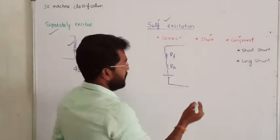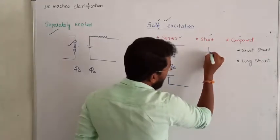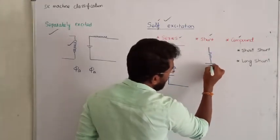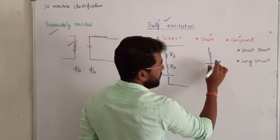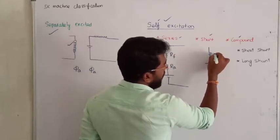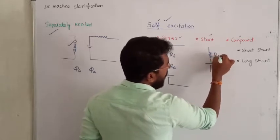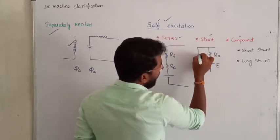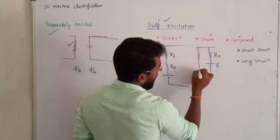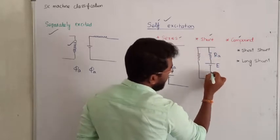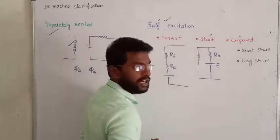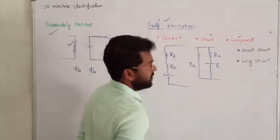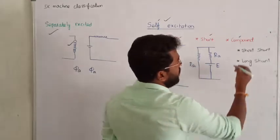Shunt means the armature winding and the field winding are connected in parallel. This is the armature winding, with its corresponding induced EMF, and the armature winding and field winding both are connected in parallel — that is called shunt winding, and this resistance is called shunt resistance.